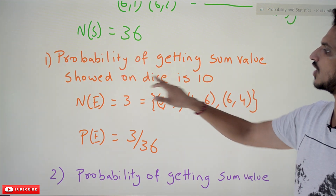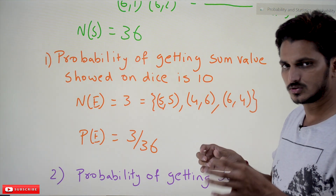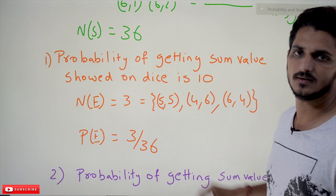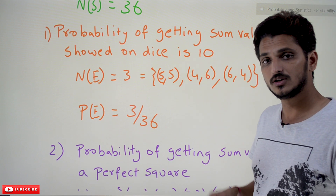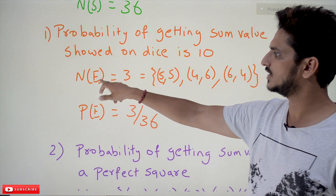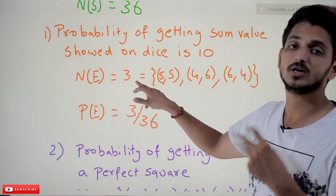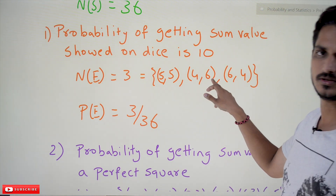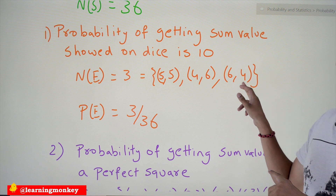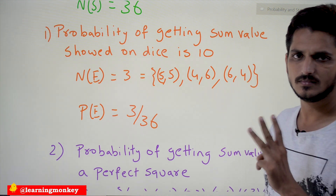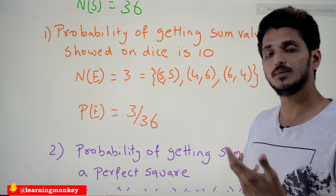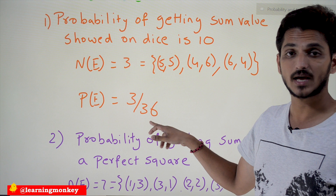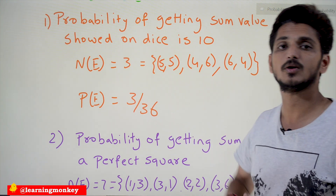The question is: find the probability of getting a sum of 10 when rolling two dice. What are all possible outcomes where the sum equals 10? There are 3 possibilities: (5,5) — 5+5=10, (4,6) — 4+6=10, and (6,4) — 6+4=10. So N(E) = 3. Probability of E = number of elements in event divided by number of elements in sample space = 3/36. This is the probability value.